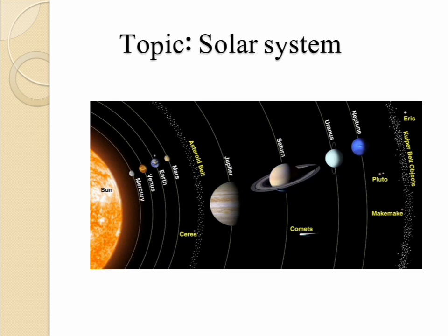let's learn today about solar system. The solar system is made up of all the planets that orbit our sun. In addition to planets, the solar system also consists of the moon, comets, asteroids, minor planets and dust and gas. Everything in the solar system orbits or revolves around the sun. In our solar system, there are 8 planets.